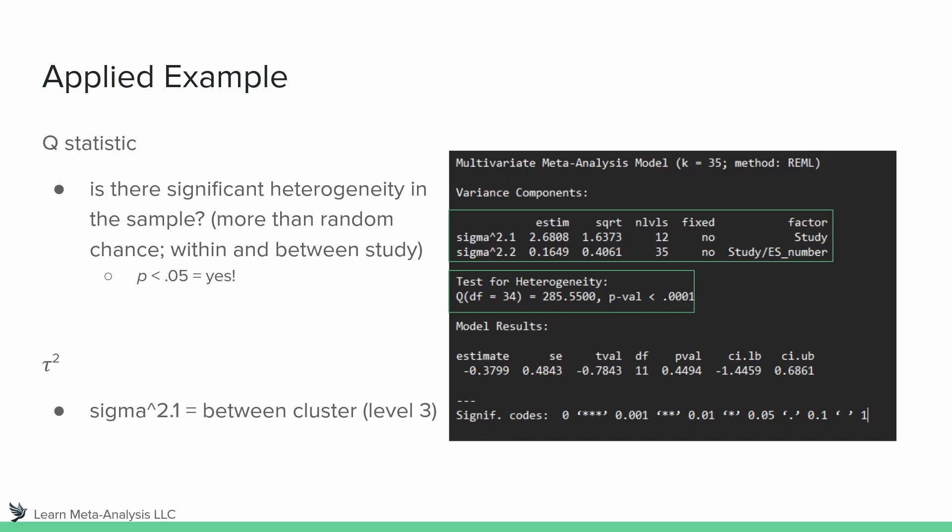Next, we look at tau-squared. Sigma 2.1 is the between-cluster estimate. Looking at the factor column, we can see it corresponds to studies — we nested effect sizes within studies. We can see we had 12 studies by the n-levels column, and in total we had 35 effect sizes. So sigma 2.1 is the tau-squared value for between cluster, with an estimate of 2.68.